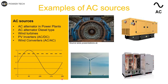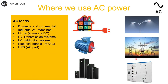AC is used in homes and commercial buildings — though a lot of devices we use are actually DC inside. In industry, most motors are AC machines. All the transmission lines we see at low, medium, or high voltage are AC. Most lights used to be AC. UPS systems and distribution panels are AC — at least for now.